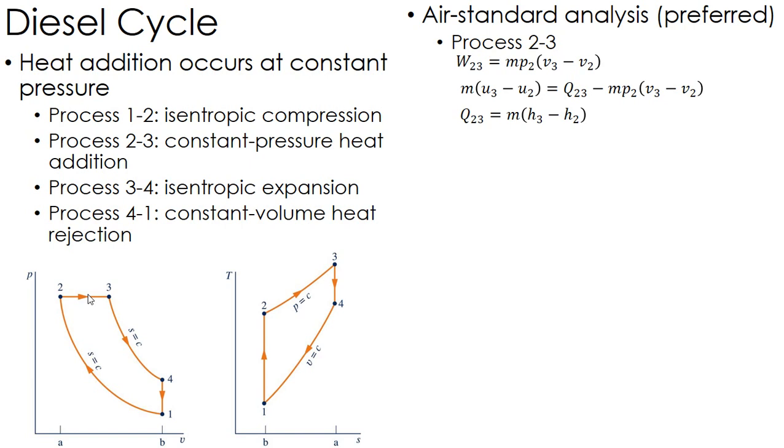All other states are the same. Thermal efficiency is the work over Q_in, where the work I can also write as the work of the cycle is Q of the cycle, so that's Q_in minus Q_out, which is 2 to 3 minus 4 to 1.